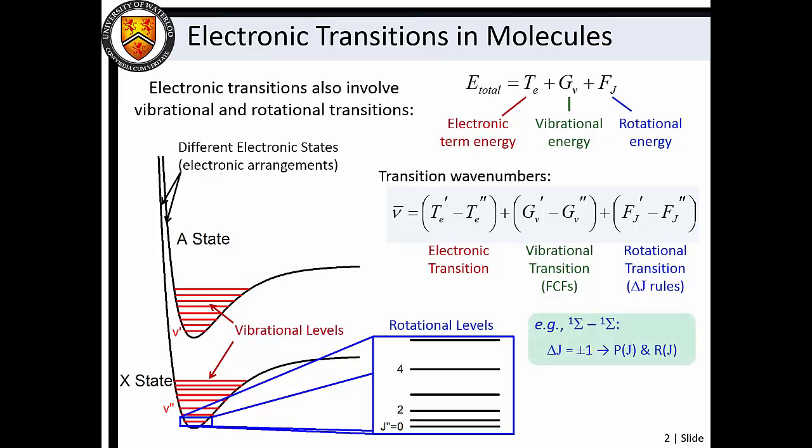If there is no change in electronic angular momentum, we are bound by the delta J equals plus or minus one selection rule for rotational transitions. If the electronic angular momentum changes during the transition, like the orbital angular momentum changes in a sigma to pi transition, our rotational selection rule becomes delta J equals plus or minus one, or zero.